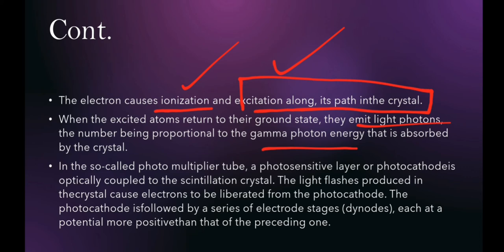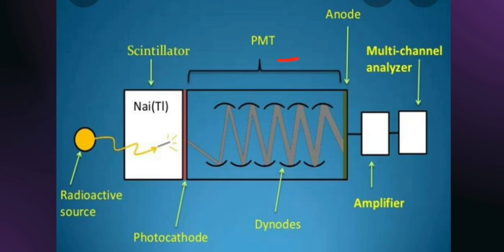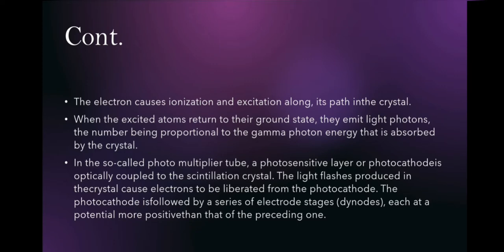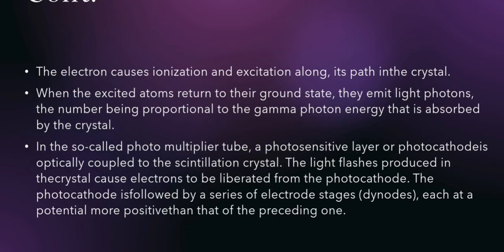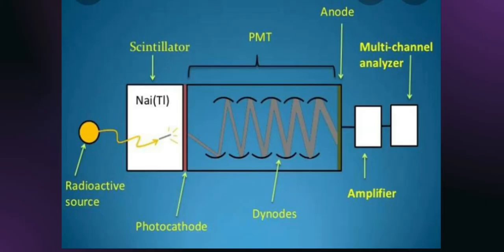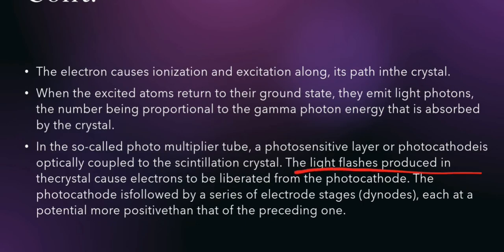In the so-called photomultiplier tube, as you can see here, what we have is this PMT — the photomultiplier tube. A photosensitive layer or photocathode is optically coupled to the scintillation crystal. This cathode is further attached to the scintillation crystal, and the light flash produced in the crystal causes electrons to be liberated from the photocathode.